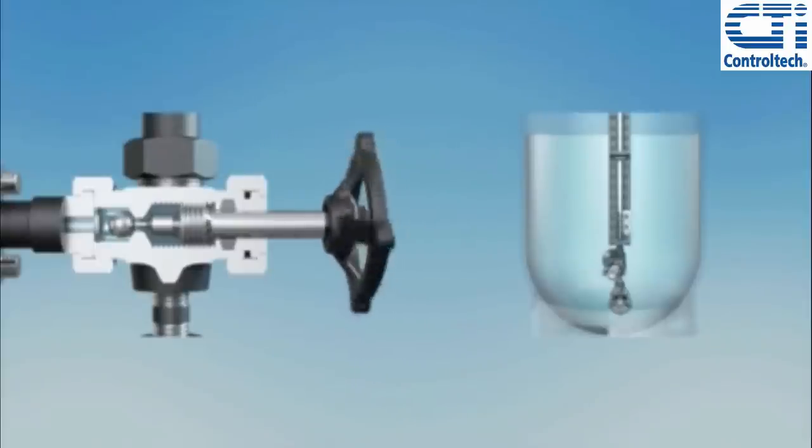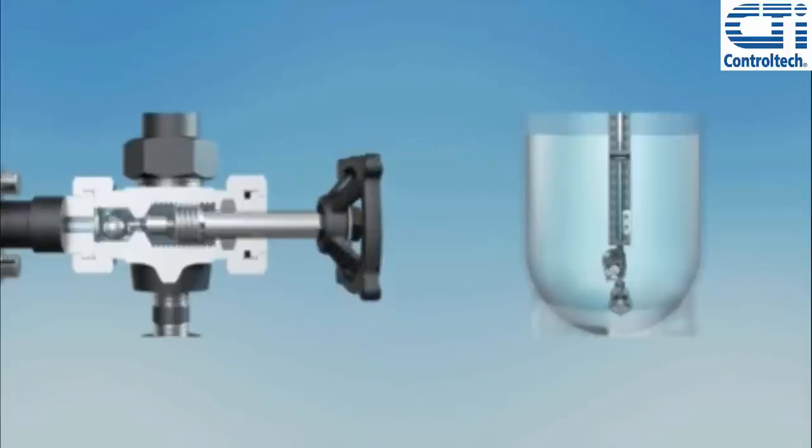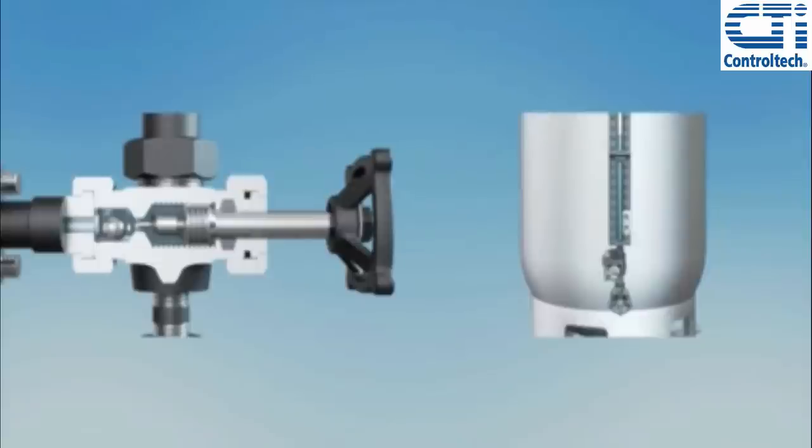the liquid's kinetic energy will force the ball check onto its seat, adversely isolating the gauge from the vessel. The gauge will then display a constant false level reading until the ball check valve is reset or the vessel level coincidentally drops to the frozen gauge level.